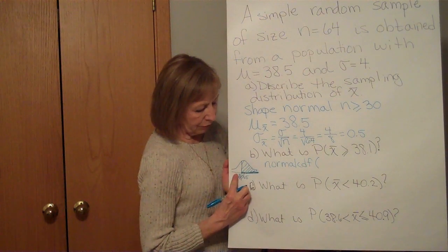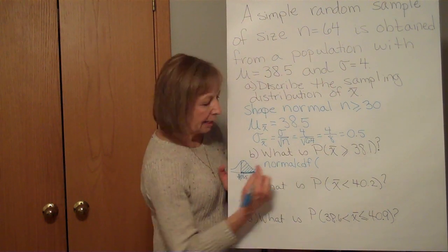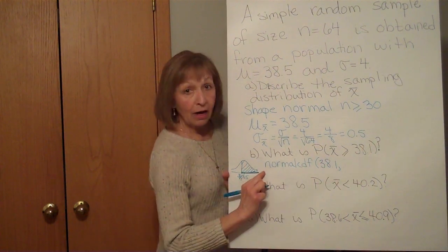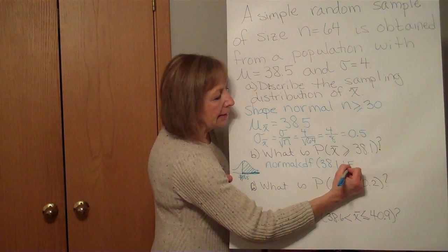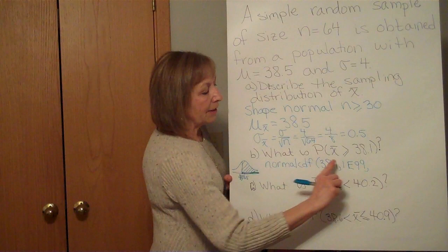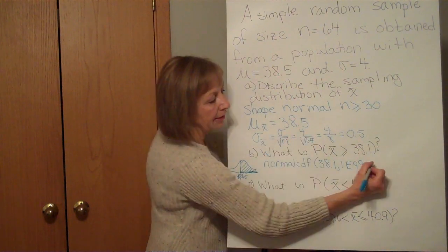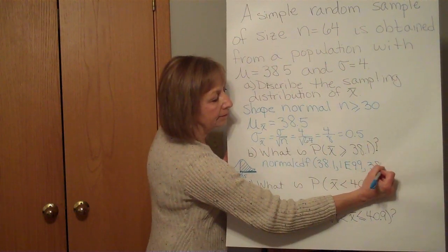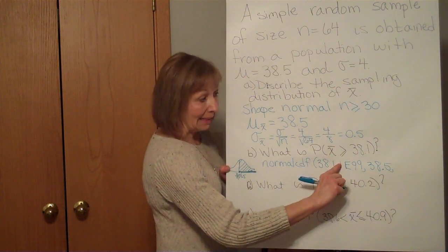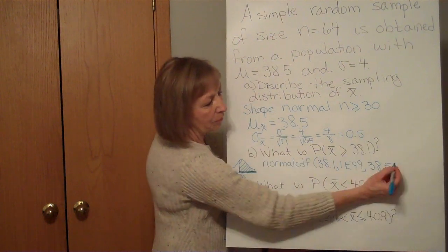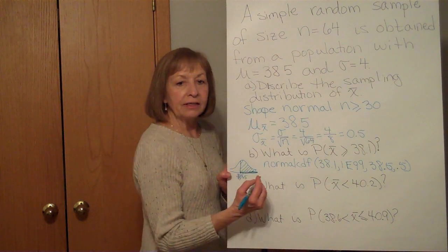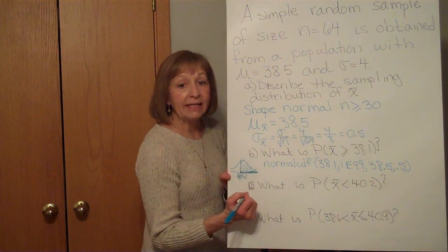So this is normalcdf, as I look from left to right, the low is 38.1, the high is forever right so we're going to go 1E99, then the mean of the distribution of the sample means is 38.5, and the standard deviation of the sample means is 0.5. So when I calculate that, I get about 0.7881.